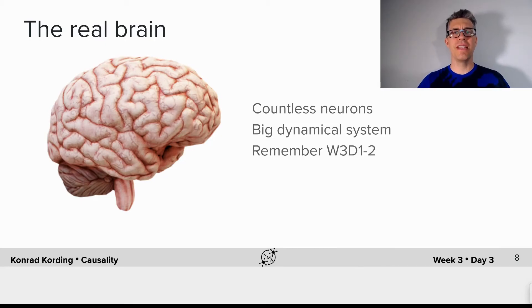So now that we convinced ourselves that the definition of causality is good, let's get a little closer to the brain. The brain has countless neurons. It's a really big dynamical system and you might remember from the first two days in this week about how we can think about such systems.